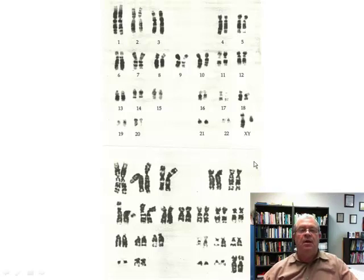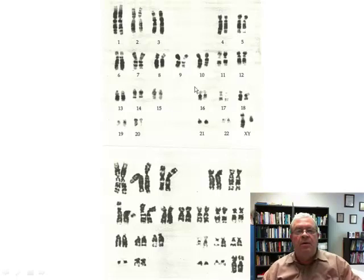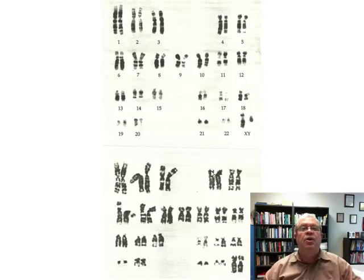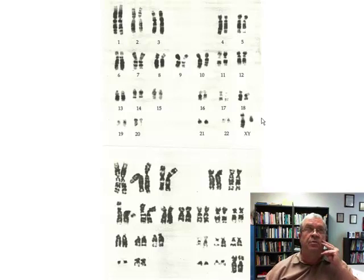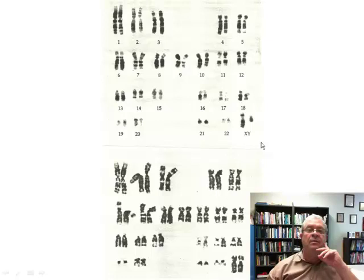Here are some real chromosomes taken from two different people. In each one we have a total of 46 chromosomes — the normal number of chromosomes in a human body cell. You notice they're arranged in pairs. Human body cells have 46 chromosomes arranged in 23 pairs. These were taken from a white blood cell of a human being.